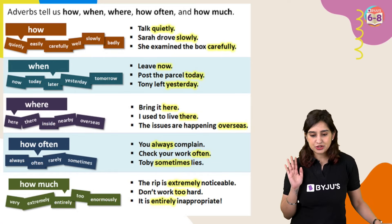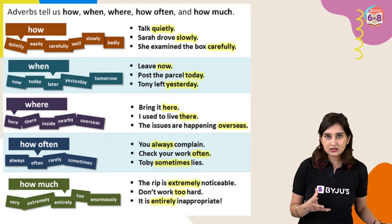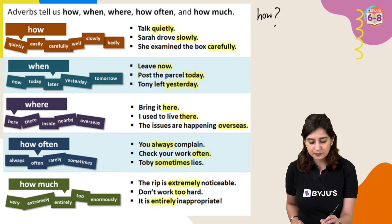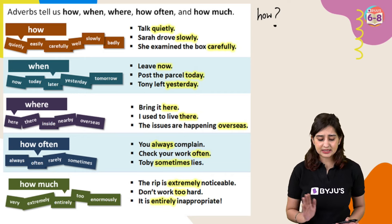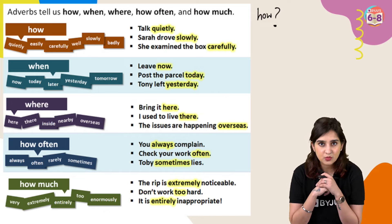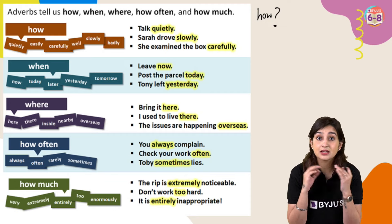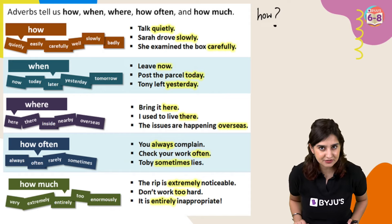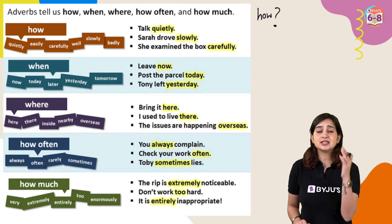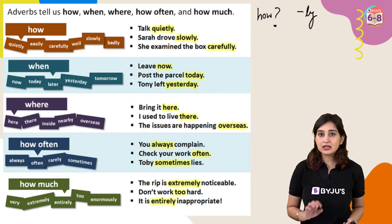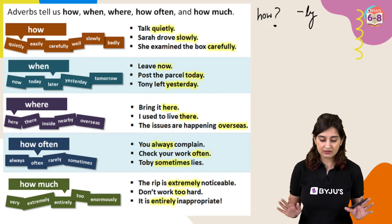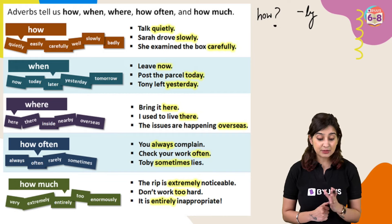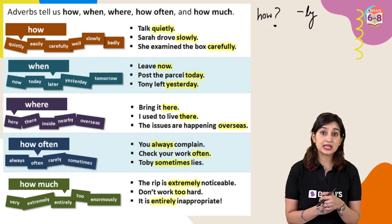Here is a full cheat sheet for you. Adverbs will always answer these questions. For example, 'how' — she was talking quietly. How was she talking? Quietly. Adverbs which are easily identified are the ones that end with -ly. Sara drove slowly — how did Sara drive? Slowly. She examined the box carefully — how did she examine the box? Carefully.